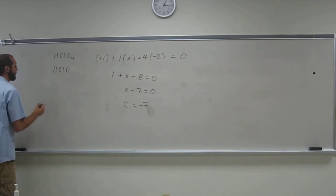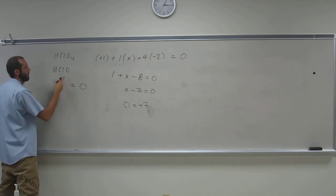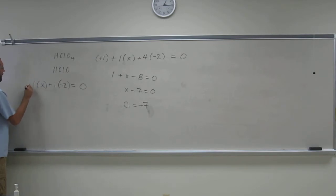Okay, so let's do this one now. So the whole thing is zero, right? Oxygen is minus two. There's one of them. Plus x. There's one of them. Plus one.